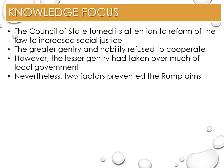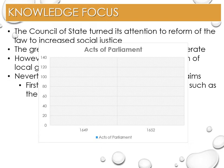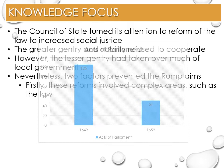Two factors prevented the Rump from providing the sought-after stability post the execution of the king in 1649. Firstly, these reforms involved complex areas such as the law, and these could not be agreed upon. The Howe Commission was set up in 1651 to investigate the reform of the legal system, but its recommendations were never adopted. The rate of reform also slowed over time, seen in the number of Acts of Parliament passed between 1649 and 1653: in 1649, 125 Acts were passed, however by 1652, this had reduced to just 51, causing concern as to what the Rump was actually doing.